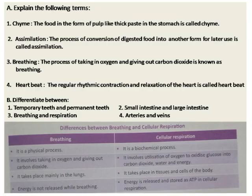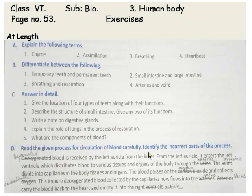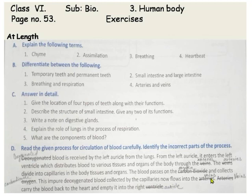Now the last question: read the given process of the circulation of blood carefully and identify the incorrect parts. Here, 'deoxygenated' should be 'oxygenated' — oxygenated blood is received by the left auricle from the lungs. From the left auricle it enters the left ventricle, which distributes blood to various tissues and organs through the arteries, not veins. The arteries divide into capillaries in the body tissues and organs. The blood passes on oxygen — not carbon dioxide — and collects carbon dioxide — not oxygen. This impure deoxygenated blood collected by the capillaries flows into the veins, which carry blood back to the heart and empty it into the right auricle. This is the correct answer.